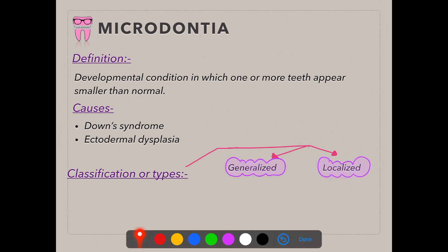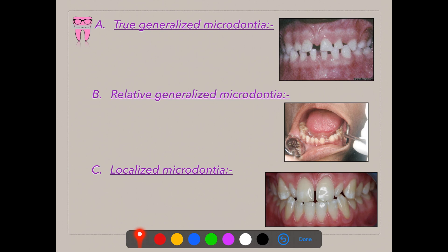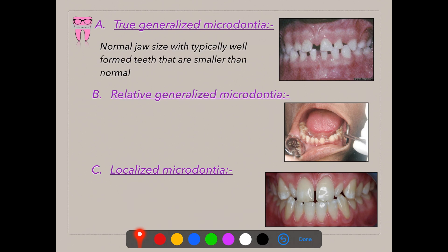Now coming to the classification or types of microdontia. There are two types: generalized and localized. Generalized microdontia is always associated with either genetic or systemic conditions. Under generalized microdontia we have true generalized microdontia and relative generalized microdontia. In true generalized microdontia, the jaw is normal in size but the teeth are smaller, as seen in the picture where the jaw is normal but the teeth are abnormally small.